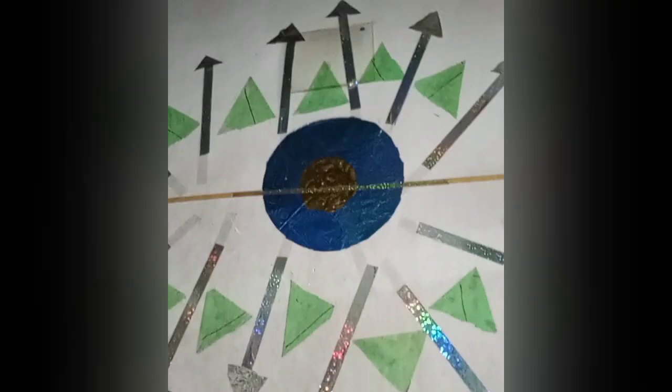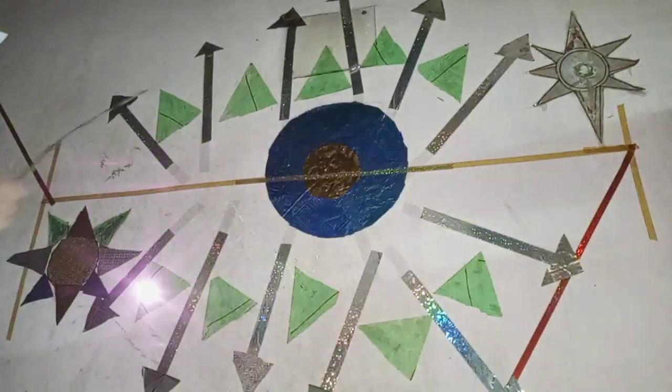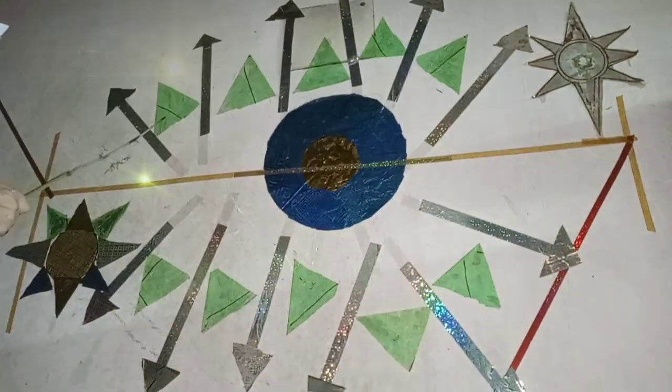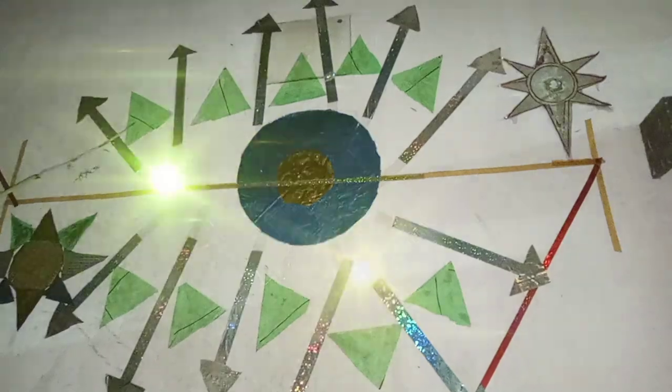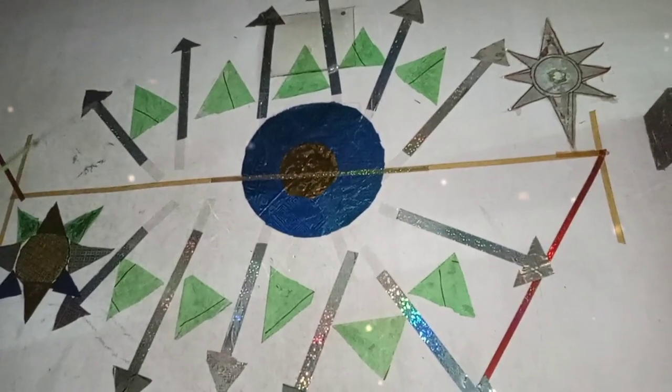Now let us discuss the names and the phenomenon of the dual vile vortices. First in the list comes the Bermuda Triangle. The Bermuda Triangle, it is a region in the western part of the North Atlantic Ocean forming a triangle between Florida, Bermuda and Puerto Rico.